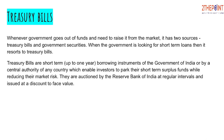What are Treasury Bills? Whenever the government goes out of funds and needs to raise money from the market, it has two sources. The first is Treasury Bills and the second is Government Securities. So if the government needs money, it can raise it through Treasury Bills or through Government Securities.